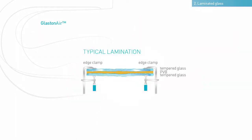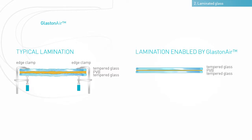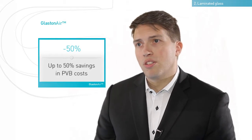Glaston air brings an extra advantage to laminated glass applications, which currently use a thick PVB layer and edge clamping to compensate for the quality defects in the tempered glass. Thanks to the superior glass surface flatness that Glaston air produces, decreasing the PVB thickness and getting rid of the non-value-adding clamping process and other downstream activities is finally possible.